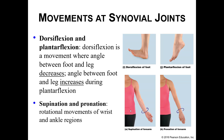Supination and pronation — this is a wrist or ankle movement. Supination has your palm facing forward, like you could hold a cup of soup. Pronation is when you rotate your wrist so your palm is now facing backwards. And that's it.